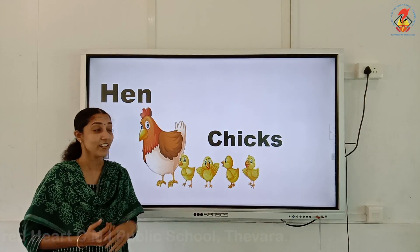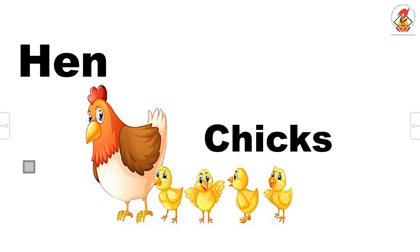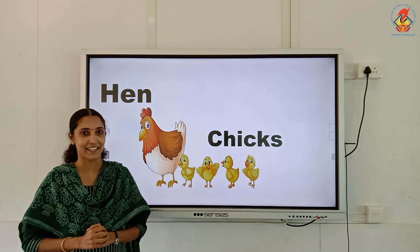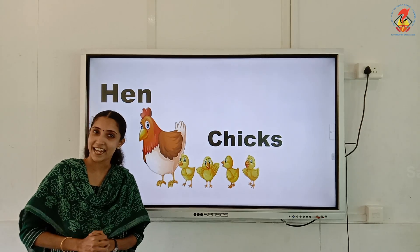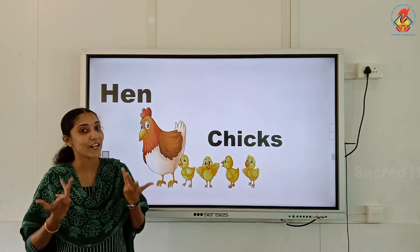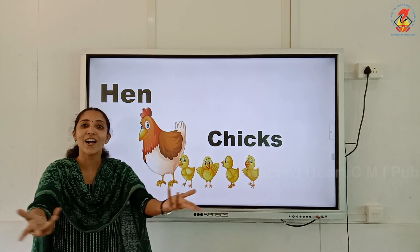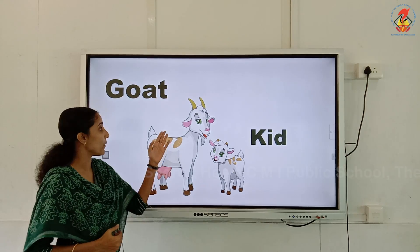Here is a mother hen and her babies. The babies of a hen are called chicks. The young one of a hen is called a chick. And what does the hen say? Cluck cluck! Can you repeat? Cluck cluck! A hen has a chick — what does it say? Cluck cluck cluck cluck, all through the day.